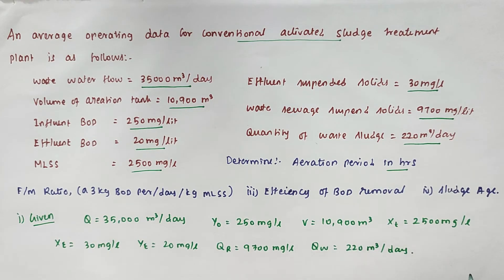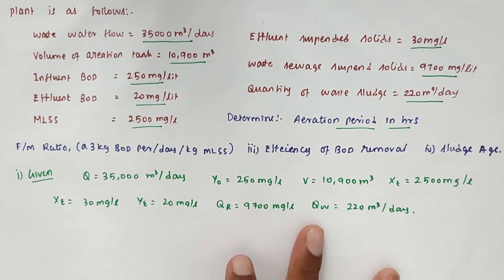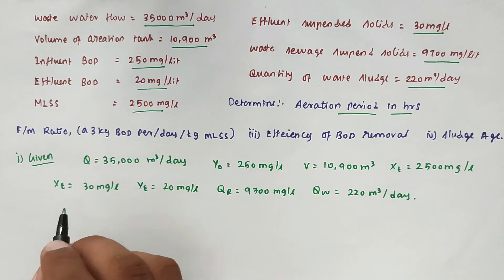So these are all the things they've given. We have to find out the first thing: aeration period in hours. The formula for aeration period T equals V by Q times 24 hours.